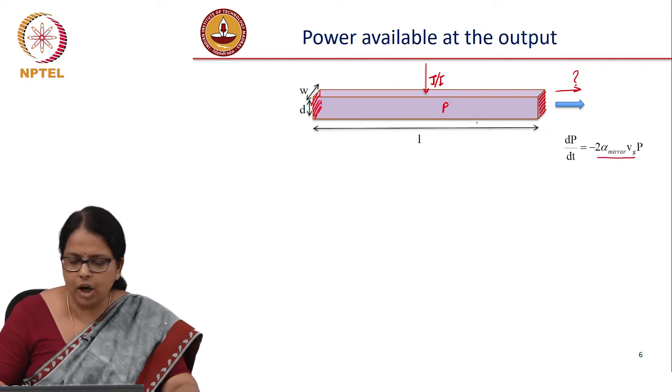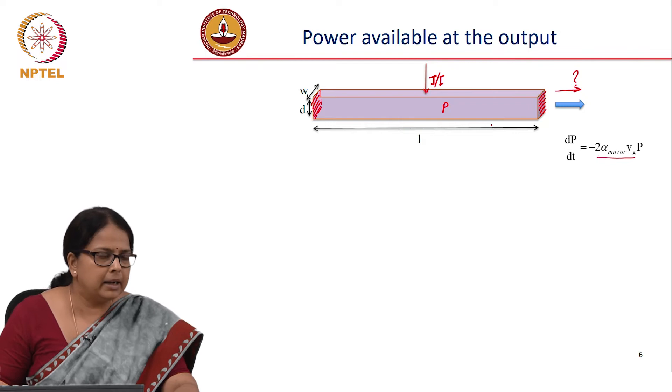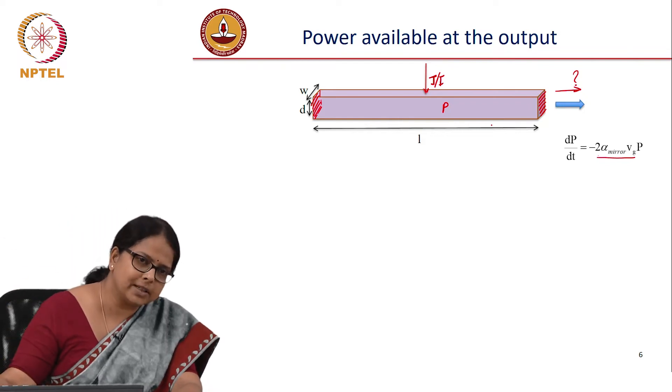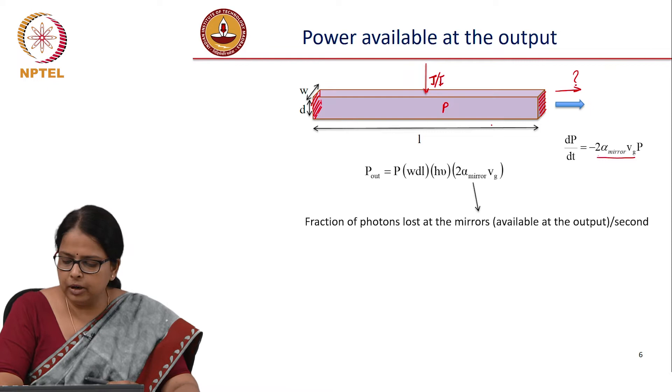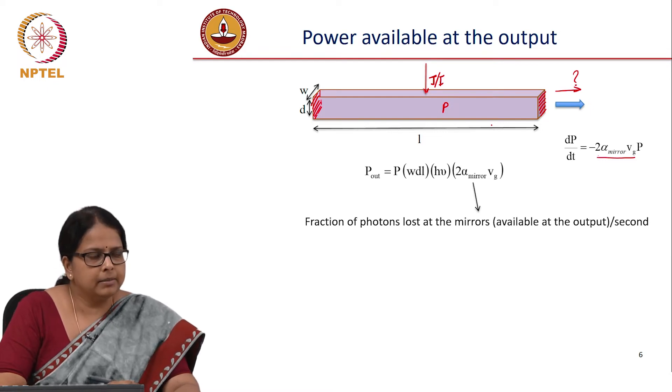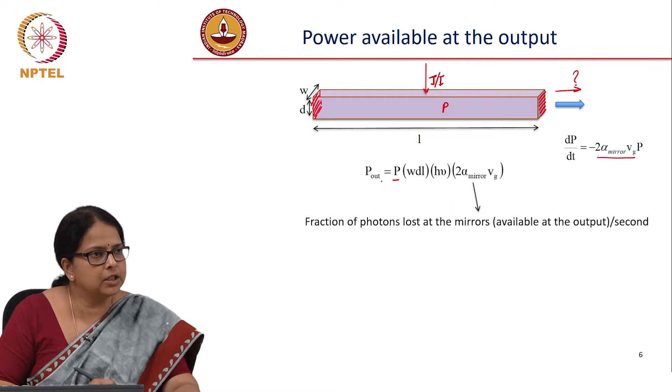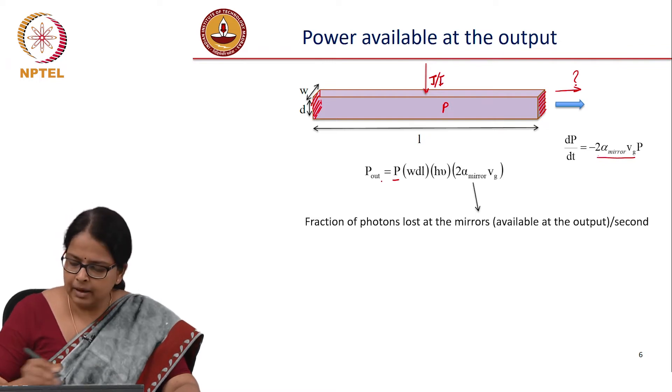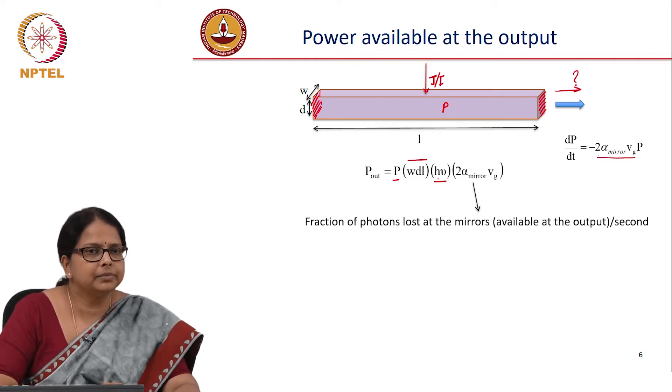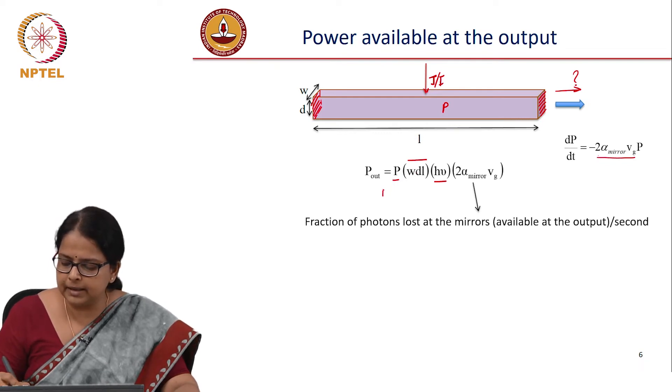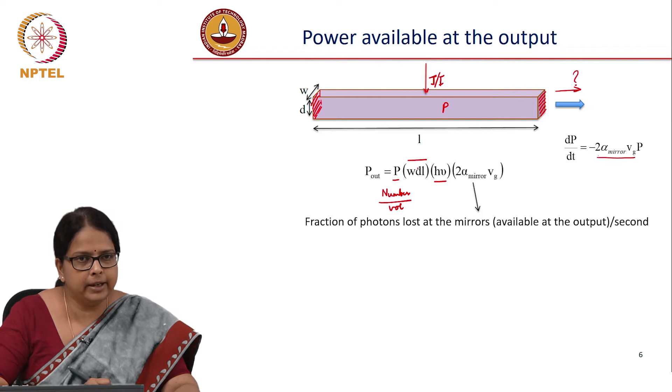So this is the power lost as far as the cavity is concerned, but whatever is the power that is lost is what is coming out of the system. Power lost in the mirror is what is coming out of the system. So your P_out, output power, must be equal to photon density. This is photons per unit volume multiplied by the volume, which is W into D into L, multiplied by hν so that number becomes joules. So this is number of photons.